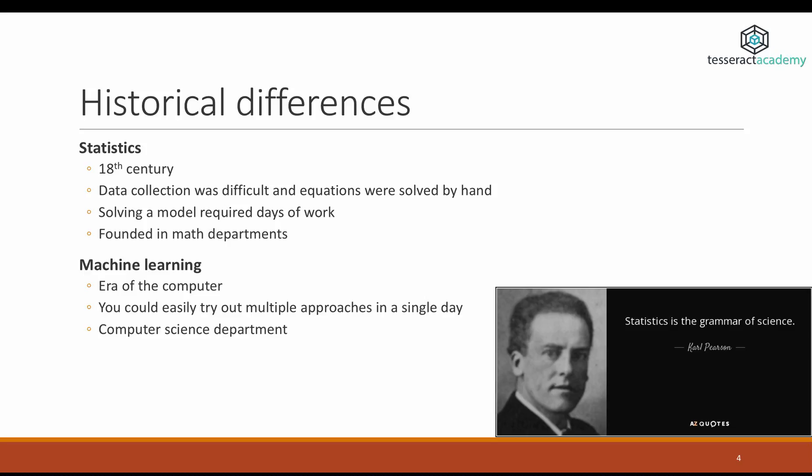On the other hand, machine learning was born in the 20th century in computer science departments, where it was easy to try out multiple approaches in a single day. With lots of data sets lying around, it's very easy to say, I'm just going to try different things, see what works, what not, and then I'll come up with theory later. This is why machine learning is so good in its predictive capabilities, but because it takes more of an experimental approach to data analysis, it really suffers in terms of interpretability.